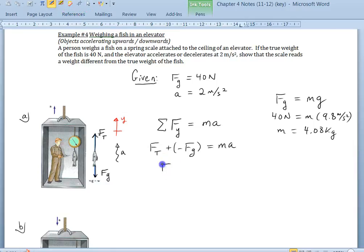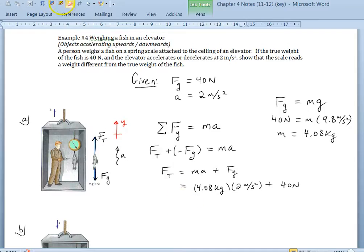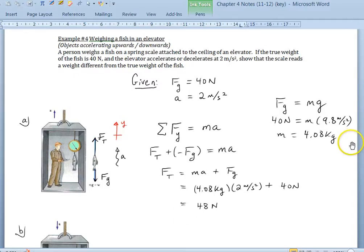Now we're ready to substitute into our problem. We have FT equals ma plus Fg. So FT equals 4.08 kilograms times the acceleration of 2 meters per second squared plus the weight, which is 40 Newtons. That will give us essentially 4.08 times 2 plus 40. So the apparent weight of the fish is 48 Newtons. It appears to weigh more than it actually does.